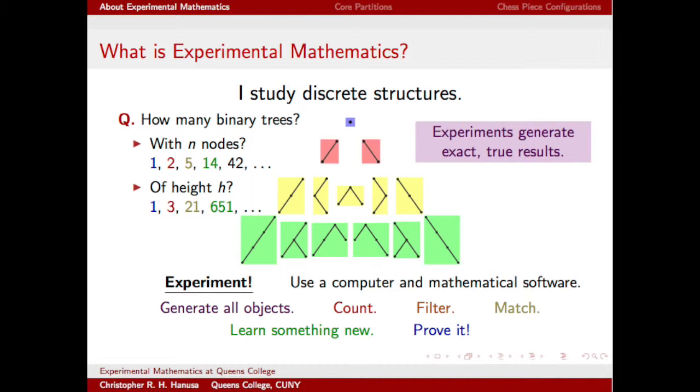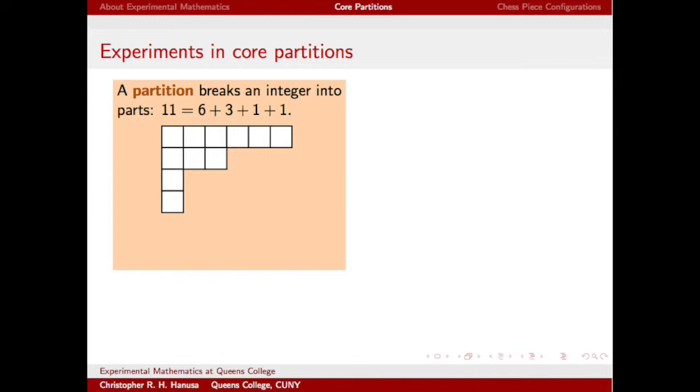Now, let me give some specific examples. The first example has to do with a certain type of integer partition, which is a way to break down integers into parts. For example, we might break down 11 into one part of 6, one part of 3, and two parts of 1, which we can represent visually with this diagram that has six boxes in the first row, three boxes in the next, and then one box in each of the next two rows. We can fill each box with a number that counts how many boxes are in the hook directly to the right and directly below the circled box. The circled box here has hook length 6.